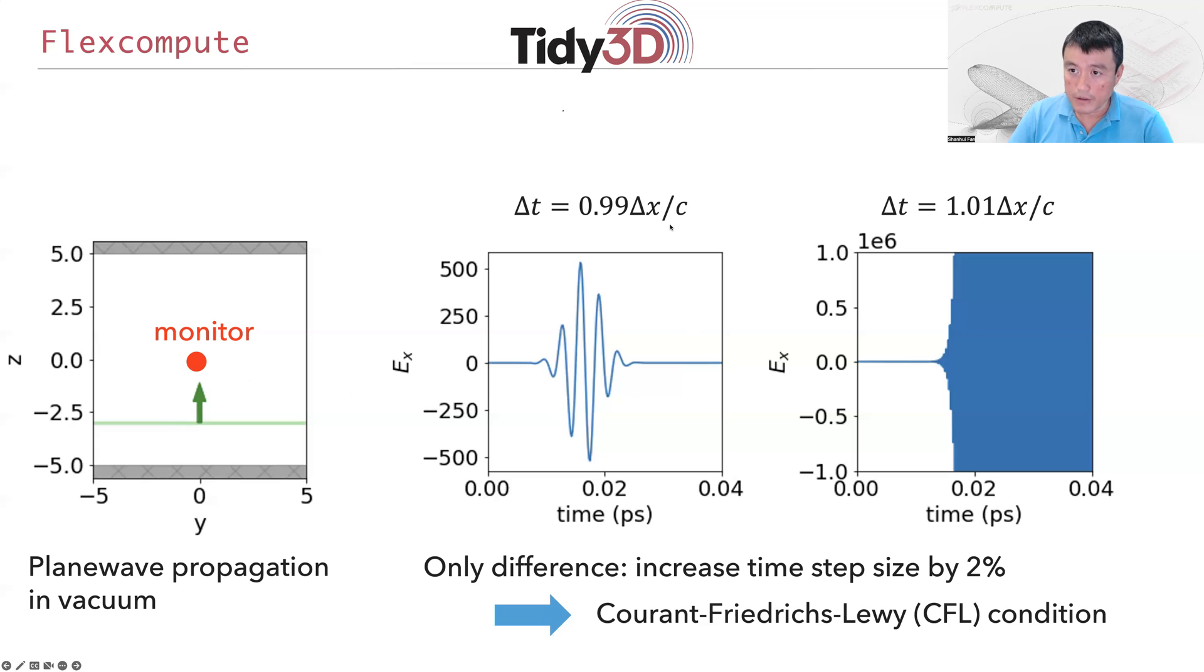On the other hand, if you increase this time step just a little bit by 2%, so that the time step is slightly larger than the discretization size in space divided by c, you can see the field actually diverges. As you can see, the choice of the temporal time step is crucial in getting the FDTD algorithm to behave correctly.